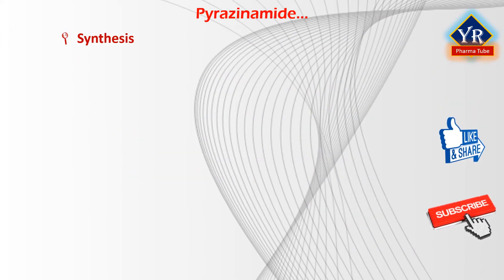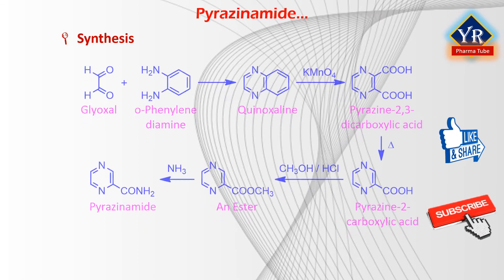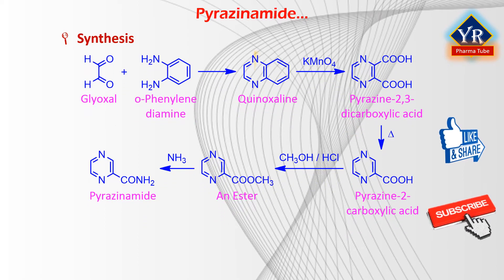Synthesis of pyrazinamide: Pyrazinamide was first synthesized in 1952. It is synthesized from quinoxalene, which is prepared by reacting orthophenylenediamine with glyoxal. Oxidation of quinoxalene gives pyrazine-2,3-dicarboxylic acid. Upon heating of this dicarboxylic acid, it decarboxylizes to eliminate a molecule of carbon dioxide to give pyrazine-2-carboxylic acid. Esterifying the resulting acid with methanol in the presence of hydrogen chloride, and further reaction of this ester with ammonia, gives pyrazinamide.